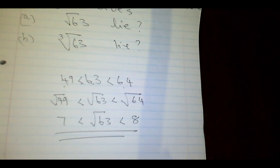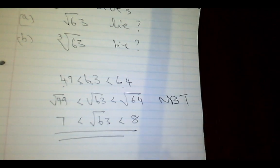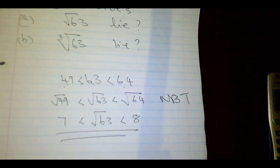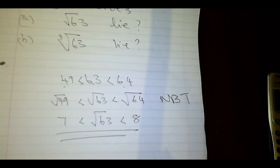This method is important because you will face tests and assessments where you must answer without a calculator — for example, NBT examinations. So you need to know your perfect squares from 1 squared up to 12 squared: 1, 4, 9, 16, 25, 36, 49, 64, 81, 100, 121, 144. You need to know all of those.